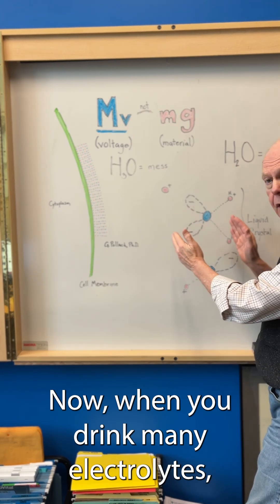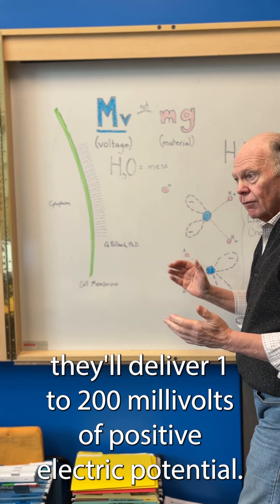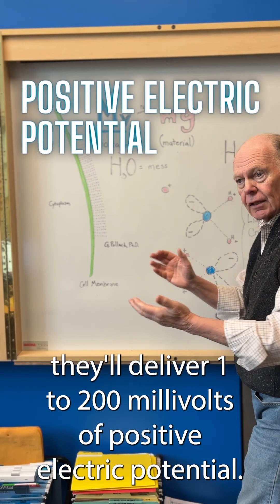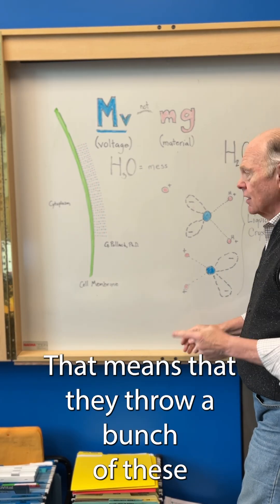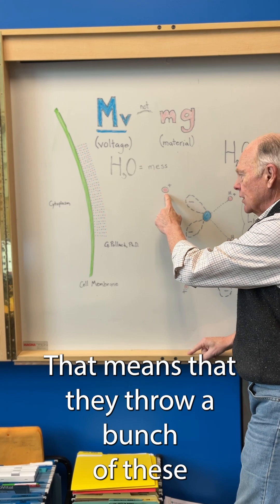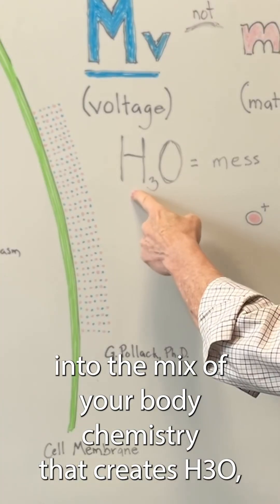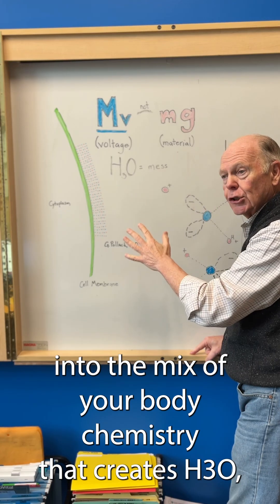Now, when you drink many electrolytes, they'll deliver 1 to 200 millivolts of positive electric potential. That means they throw a bunch of these hydrogen atoms into the mix of your body chemistry. That creates H3O, not H2O.